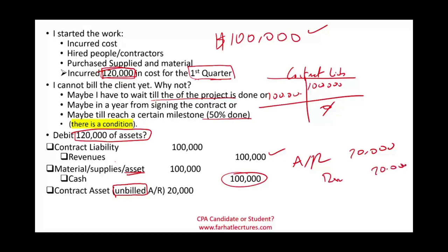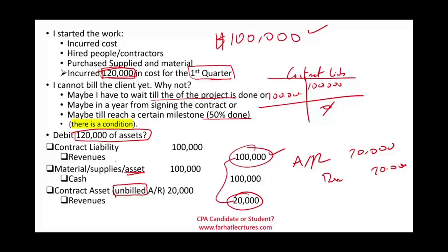If I invoice them, they're going to be upset — it's not the deal; they said bill me once 50% is done. But I need on my books to know how much unbilled accounts receivable I have. I know I'm going to receive the money because there's only a condition stopping me from billing them. Therefore, I debit contract asset $20,000 and credit Revenue, because I did the work. So notice: $100,000 of revenue plus $20,000 of revenue equals $120,000 total revenue. The revenue could be higher, but the point is I credit revenue for the work performed.